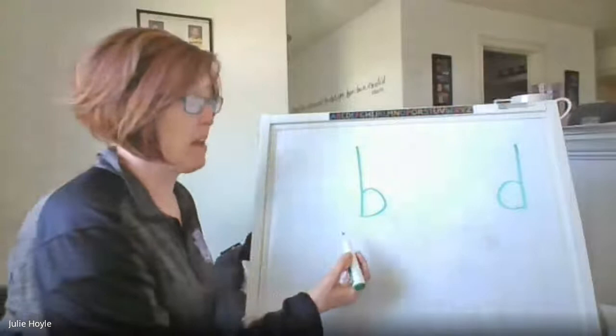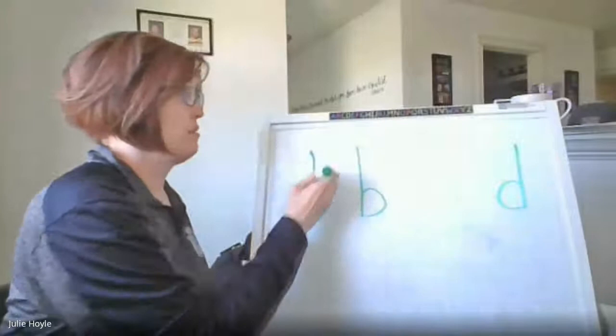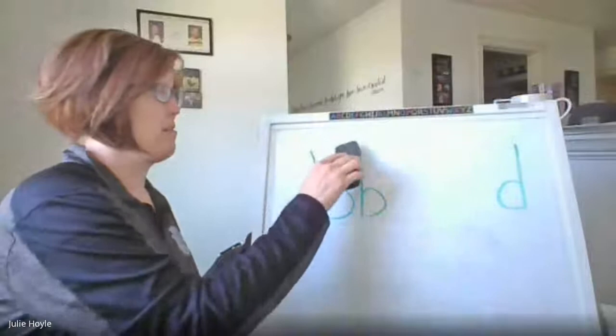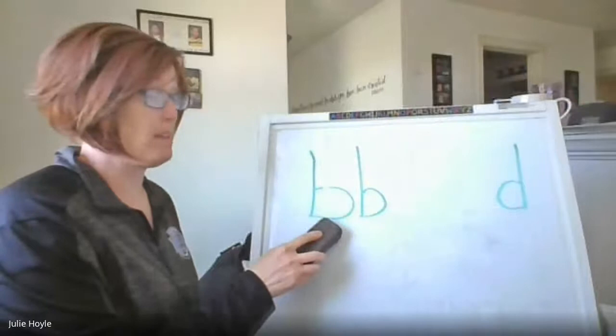There's a baby b inside every capital B. So if we make a capital B and we erase that top bump, there is our baby b. There's always a baby b in every capital B.